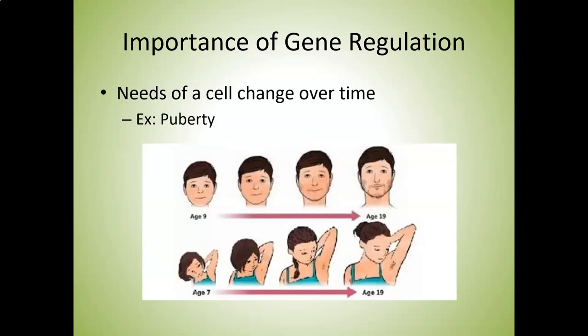One reason is that our needs change. This is just a picture of two people going from children to adults. Their fundamental genetics isn't really changing, but their bodies are changing. As a person ages, different genes get turned on, different genes get turned off, and therefore different proteins get made or not made.